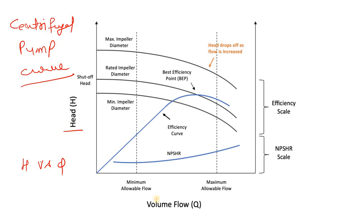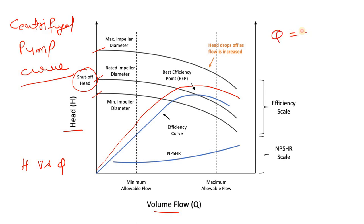The pump curve is head versus Q — the Y-axis is head and the X-axis is flow rate Q. There are three scenarios: maximum impeller diameter, rated impeller diameter, and minimum impeller diameter. To understand shutoff head: whenever the flow rate is zero, the head will be maximum. For the rated impeller diameter, when Q is zero, the head is at its maximum point, and the curve decreases after that.